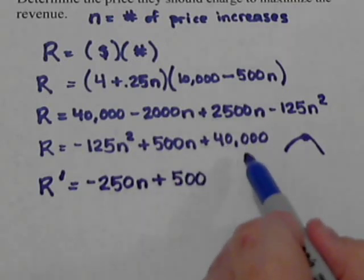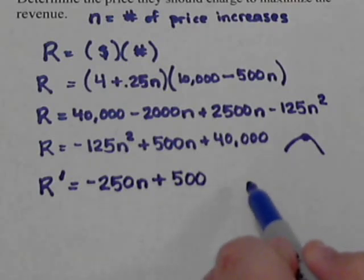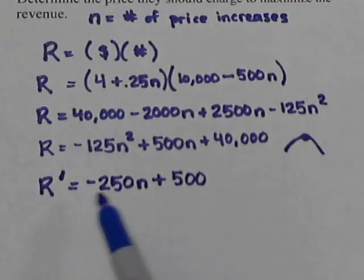And the 40,000 is a constant. So, when we go to take the derivative, that part goes to 0. So, that just goes away. So, here's our derivative for the revenue.